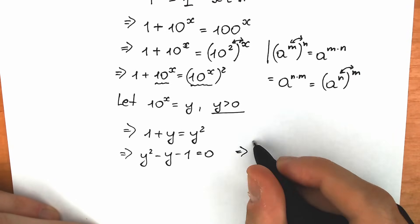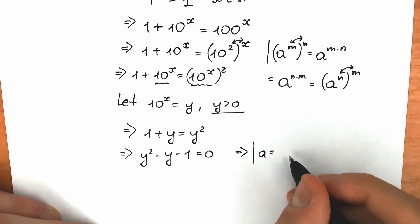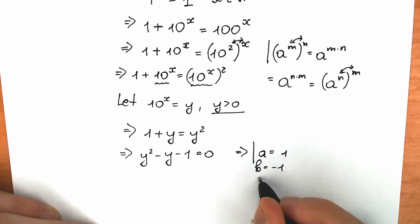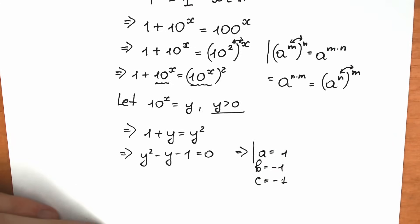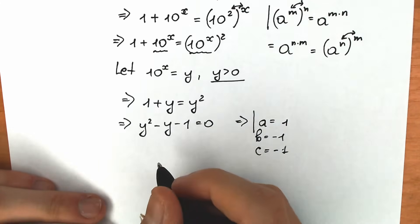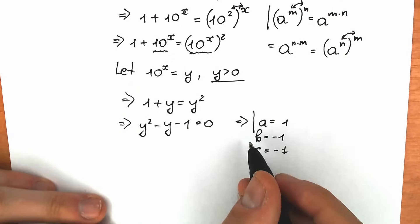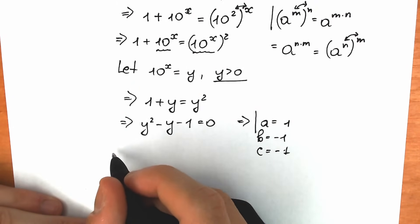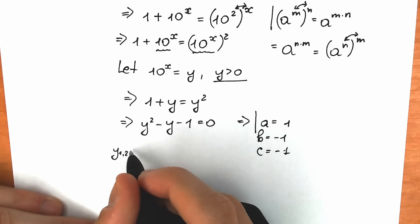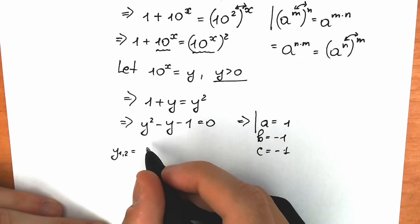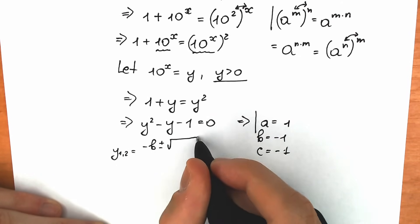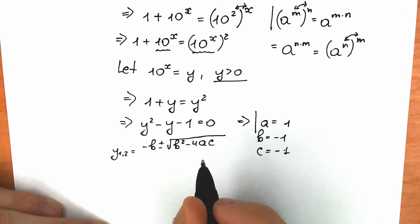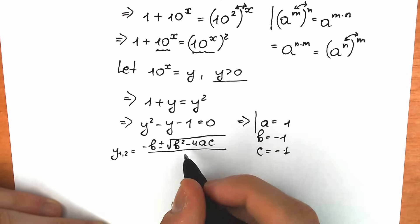Bringing everything to one side: y squared minus y minus 1 equals 0. From here, we know that a equals 1, b equals minus 1, and c equals minus 1. Now let's plug these elements into our quadratic formula: y = (−b ± √(b² − 4ac)) / (2a).